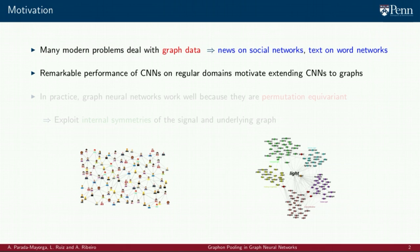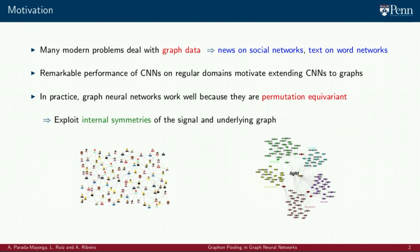In this context, graph neural networks arise as the counterpart of convolutional neural networks for network problems, motivated by the remarkable performance that CNNs have achieved on regular domains and, in particular, on image processing applications. In practice, GNNs work well because they are permutation equivariant and stable. These important properties aid learning because they allow GNNs to exploit internal symmetries of the signal and of the underlying graph during the training phase of the neural network.